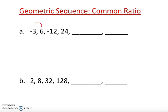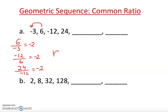I'm going to divide the second number by the first number: 6 divided by -3 gives -2. Then -12 divided by 6 is also -2, and 24 divided by -12 is also -2. So clearly the common ratio is equal to -2.